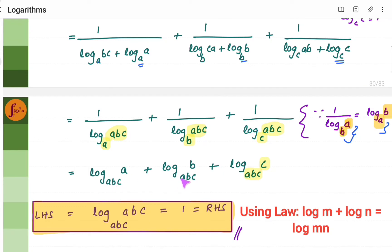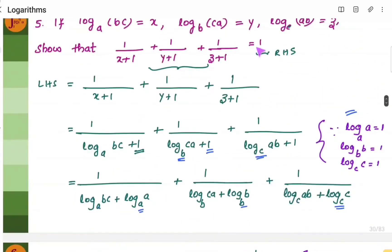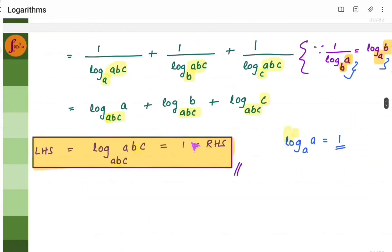If you notice, all the bases are now the same (base abc). When you add all these up, log a plus log b plus log c to base abc is log(a times b times c) to base abc, which is log abc to base abc. Since the base and the number are the same, the value is 1. Therefore LHS equals RHS equals 1, and we have proven the statement is true.